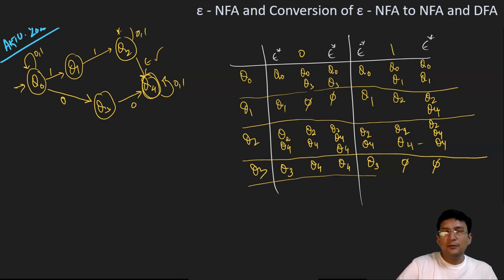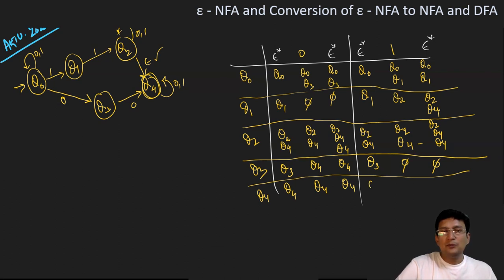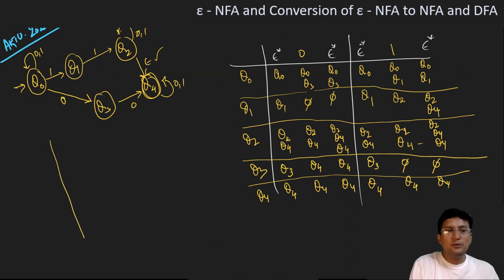Now showing the transition for state q4. q4 on Epsilon closure is q4. q4 on 0 moves to q4 state, and Epsilon closure of q4 is q4. Similarly, the Epsilon closure for q4 is q4; on 1 it remains at itself, and the Epsilon closure of q4 is q4. So we are ready with the Epsilon closure, and we can draw the transition table for the NFA.